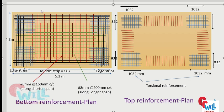The black reinforcement lines show the reinforcement for the edge strips, which we already discussed. In the top reinforcement plan, at all four corners torsional reinforcement has been provided. In the middle, the strip reinforcement can be seen, which is the bottom reinforcement. The distance for this bent-up reinforcement is also discussed in the video.